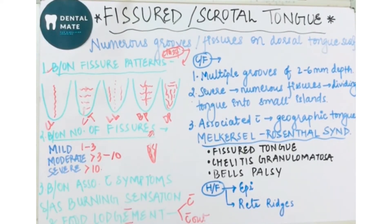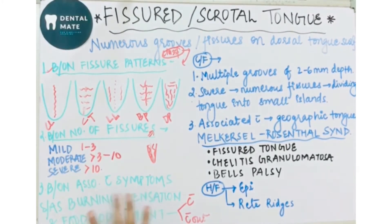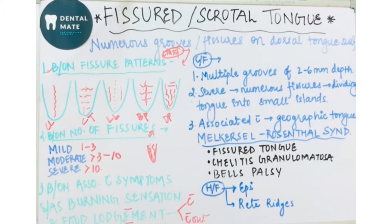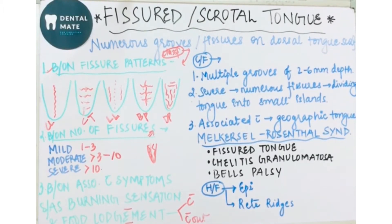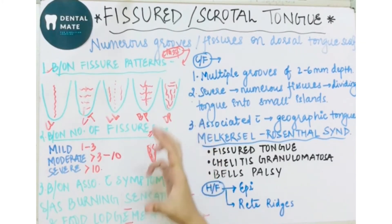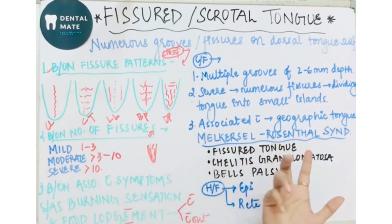Based on association with symptoms such as burning sensation and food lodgment, fissured tongue can be classified as: with burning sensation and food lodgment, or without burning sensation and food lodgment. This completes the classification of fissured tongue.